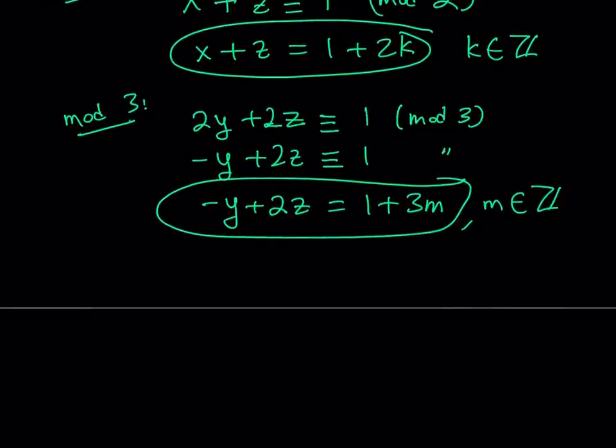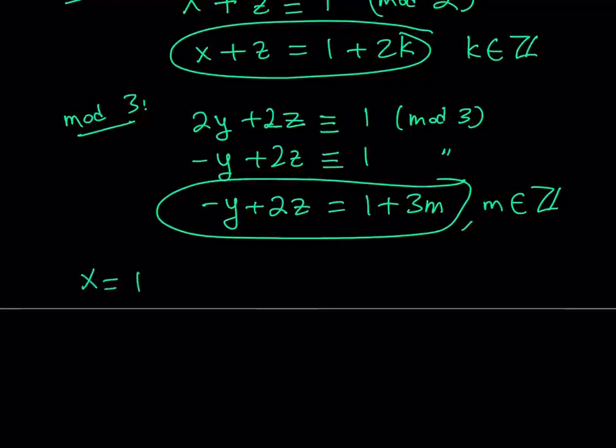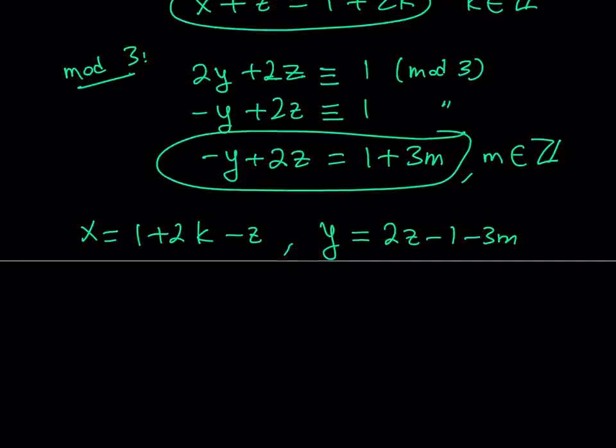So let's do the following. Let's isolate the x and y from these equations. So if I isolate x from the first equation, I get x equals 1 plus 2k minus z. And from the second equation, I get, I have to put the y on the other side, 2z minus 1 minus 3m. So these are my two variables in terms of the other variables. Of course, we introduced new variables, but that's okay. We're going to get rid of them.